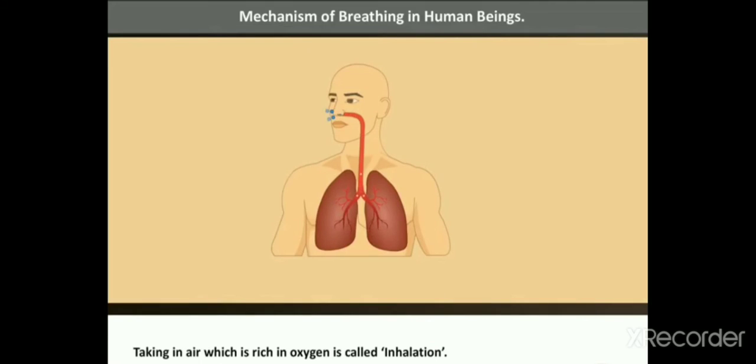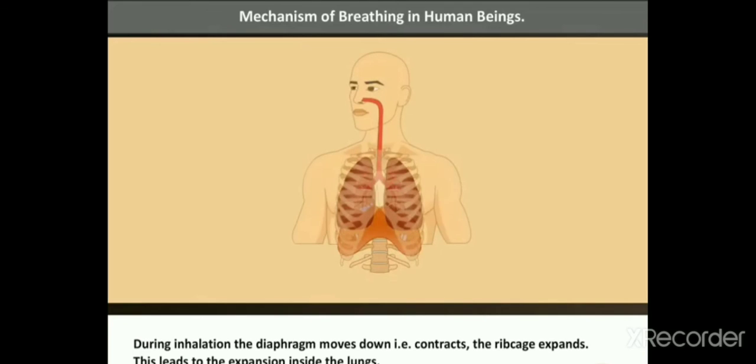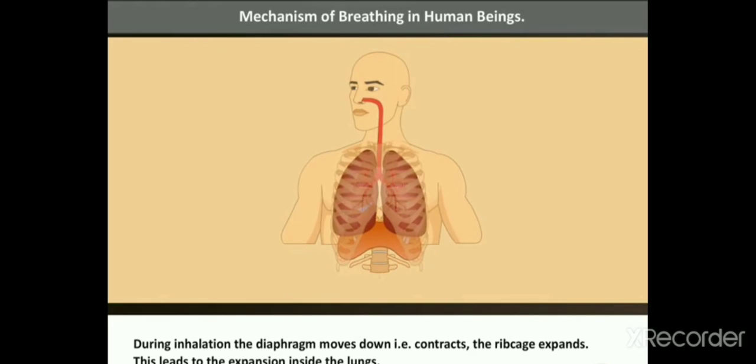Taking in air which is rich in oxygen is called inhalation. During inhalation, the diaphragm moves down, in other words, contracts. The rib cage expands. This leads to the expansion inside the lungs.